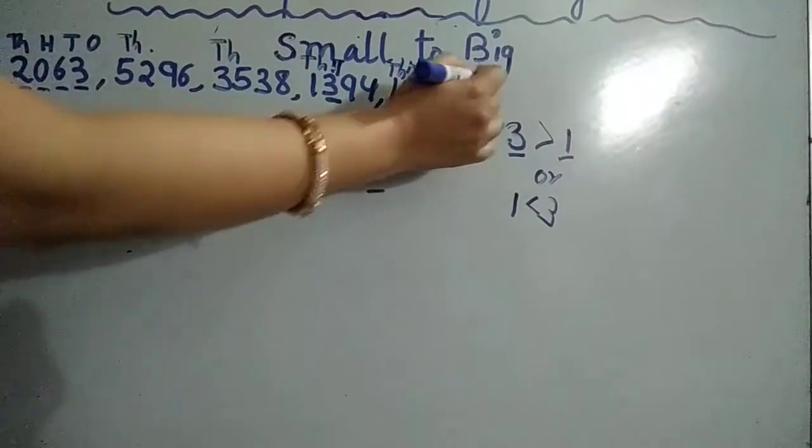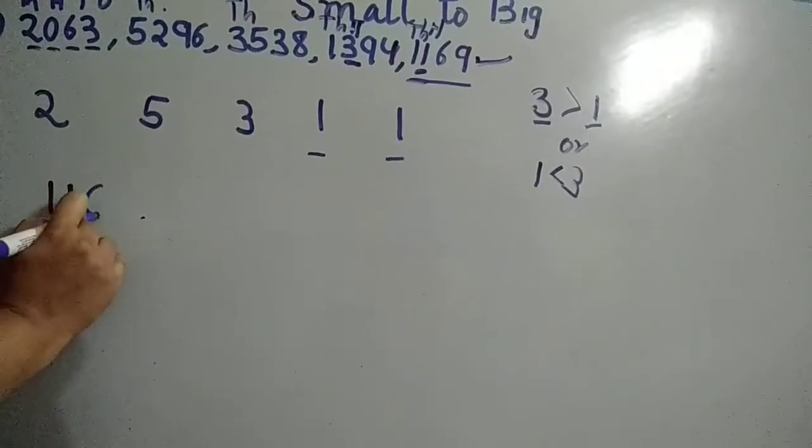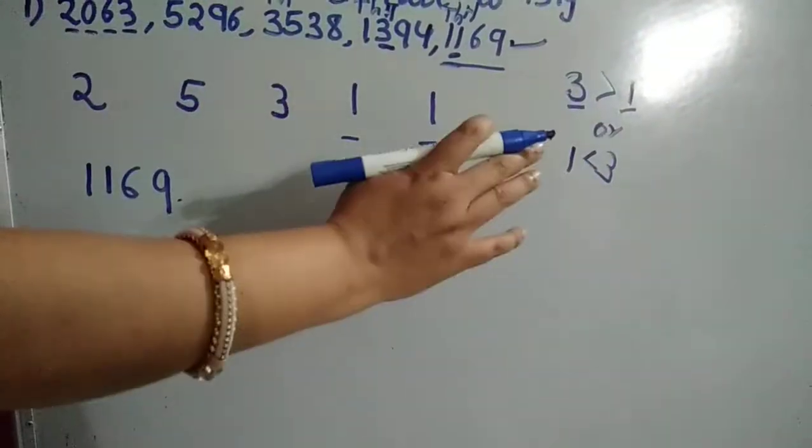So this number 1169 we will write at the beginning. That is the smallest number. Small to big, we have to increase in that order.